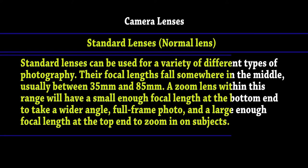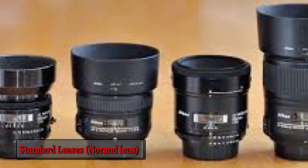A standard lens can be used for a variety of different types of photography. Their focal length falls somewhere in the middle, usually between 35mm and 85mm. A zoom lens within this range will have a small enough focal length at the bottom end to take wider-angle, full-frame photos and a large enough focal length at the top end to zoom in on a subject. The lens types can be understood from these images.